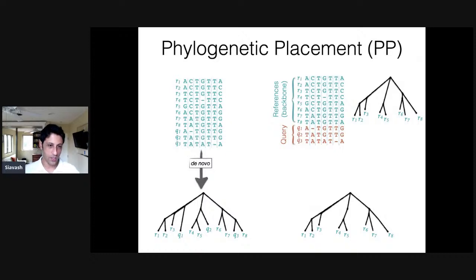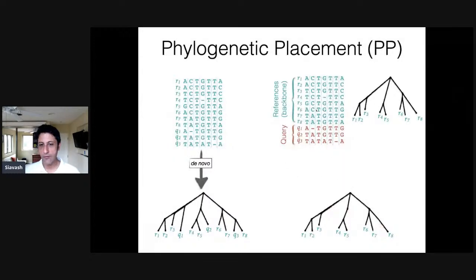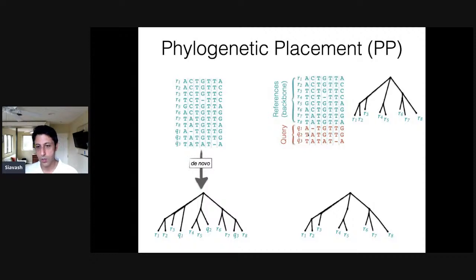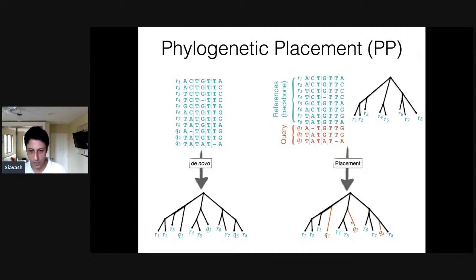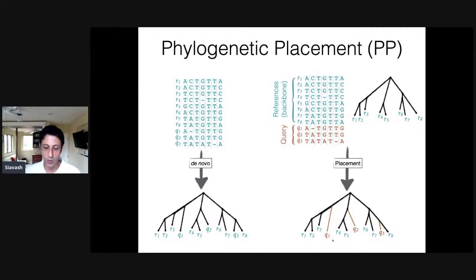Everyone knows what de novo phylogenetic reconstruction is: you have your sequences, you do some inference, you get a tree. Phylogenetic placement is where you have a bunch of sequences for which you already have a tree — we call those reference or backbone sequences — and you have some new query sequences; you want to know where on the tree they belong. The placement is basically just the addition of these new queries onto the existing tree. Usually we do not try to infer the relationship between queries themselves; queries are placed independently.